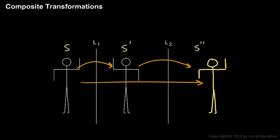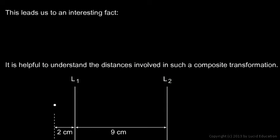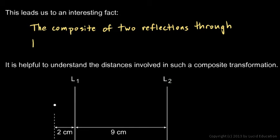So let's write that. Write that in your notes. There's a place in your notes where it says, this leads us to an interesting fact. And let's write, the composite of two reflections through parallel lines is a translation.